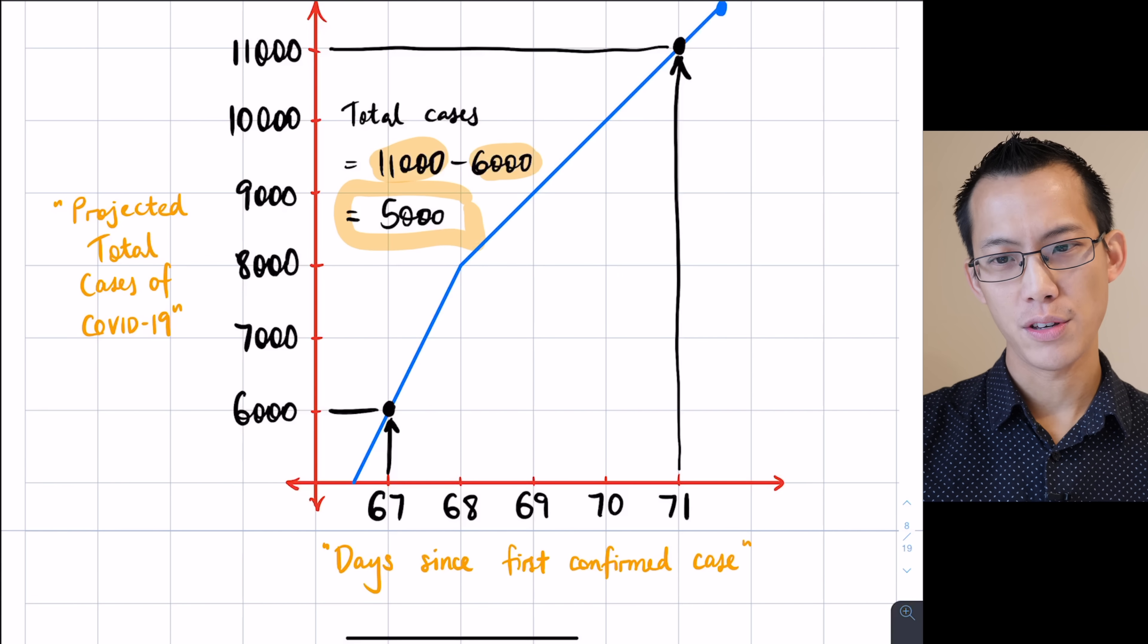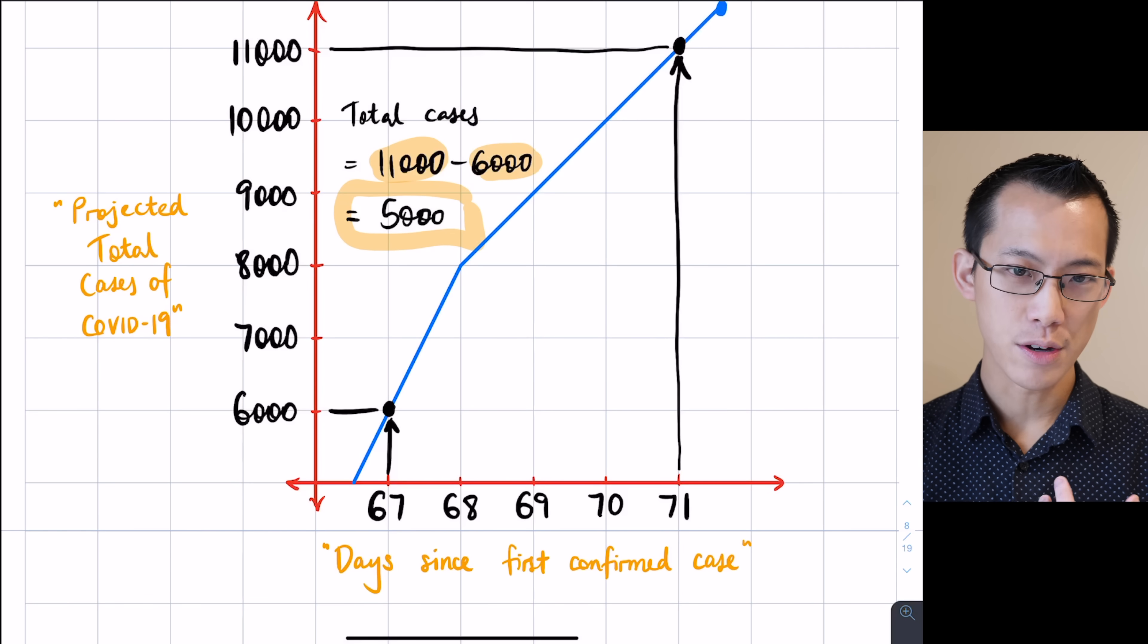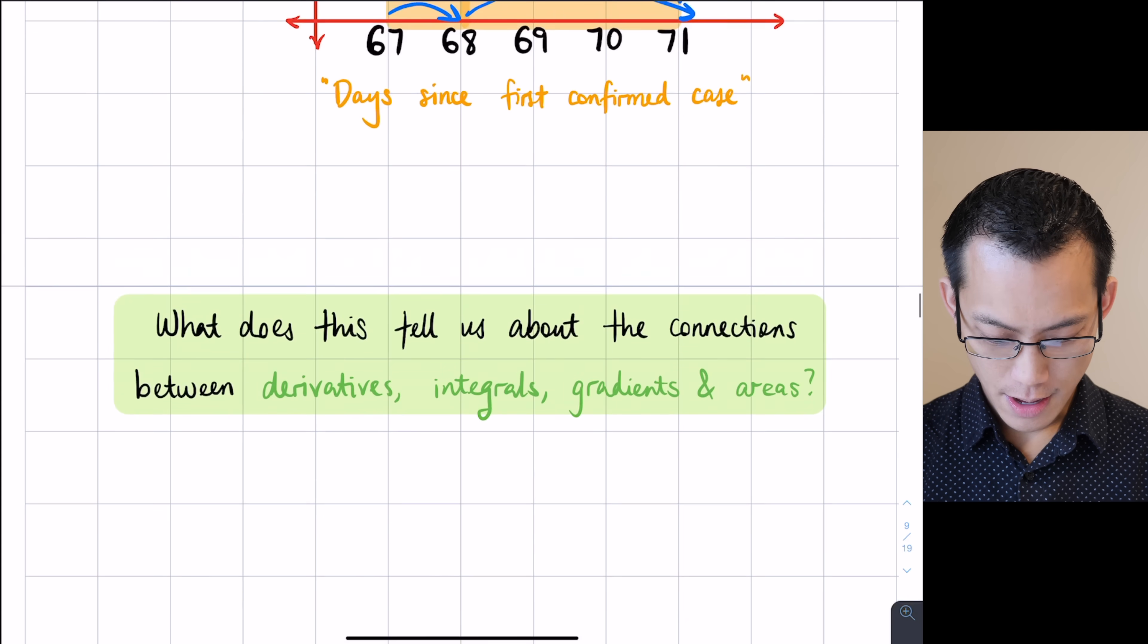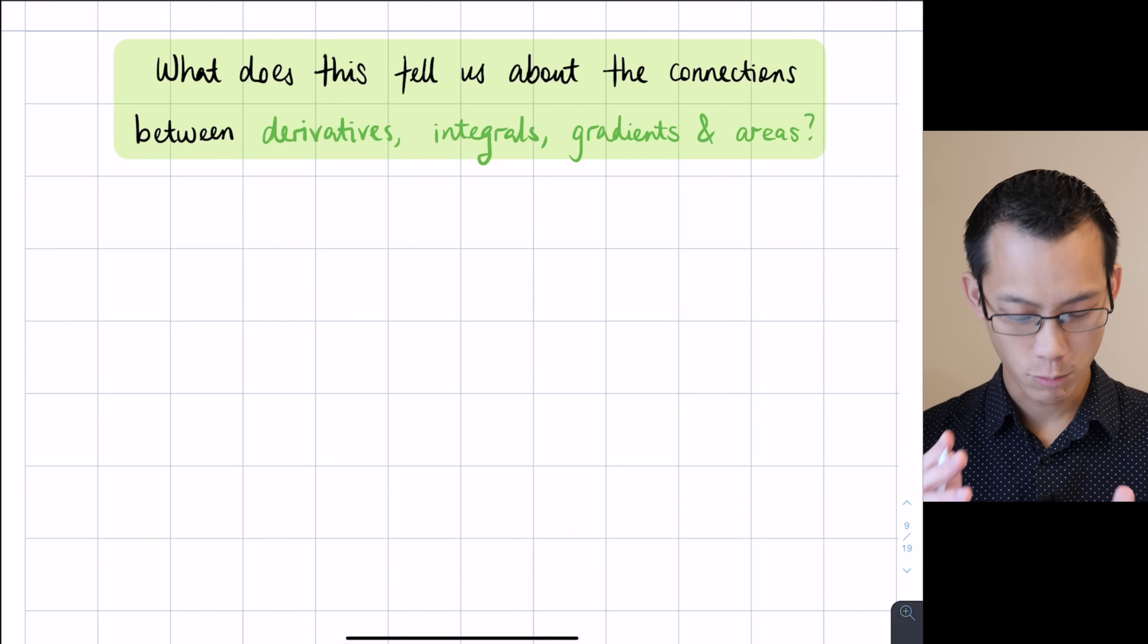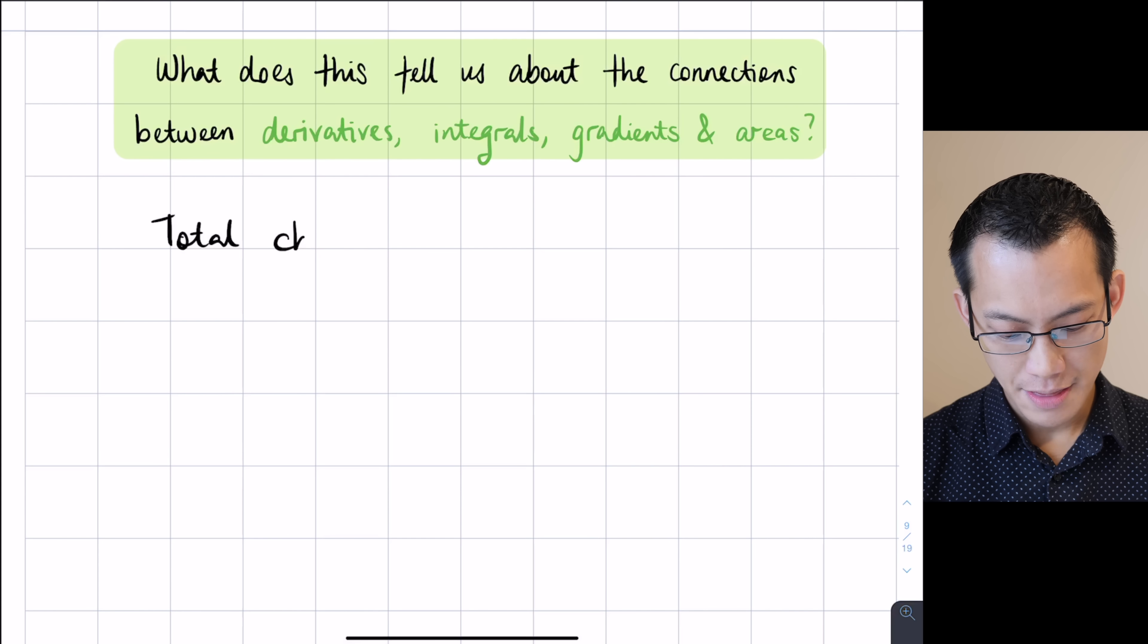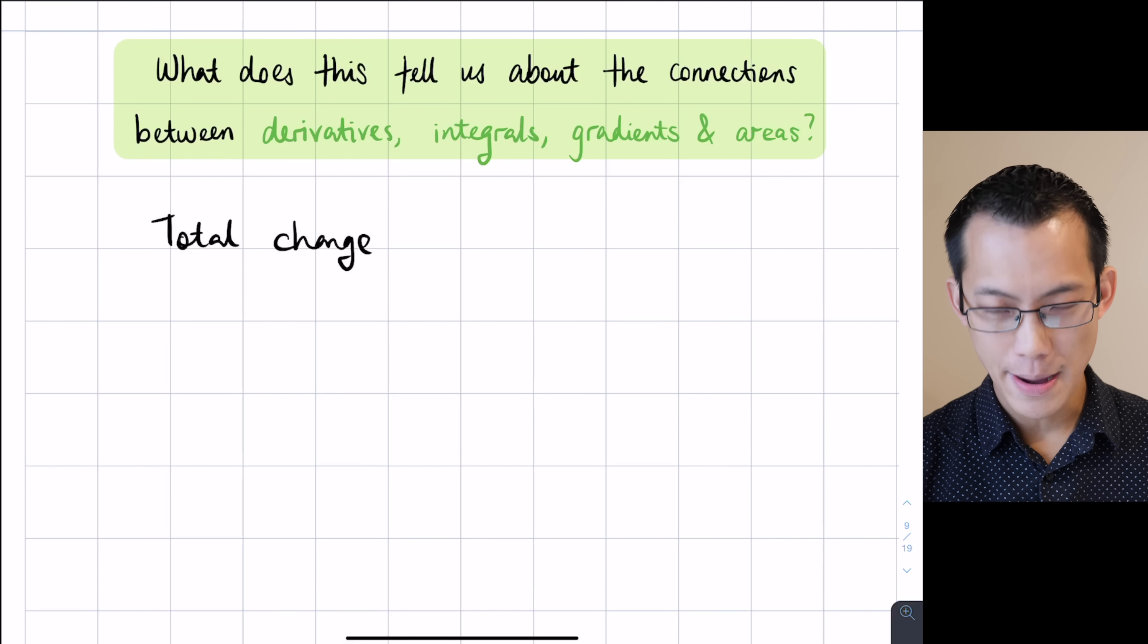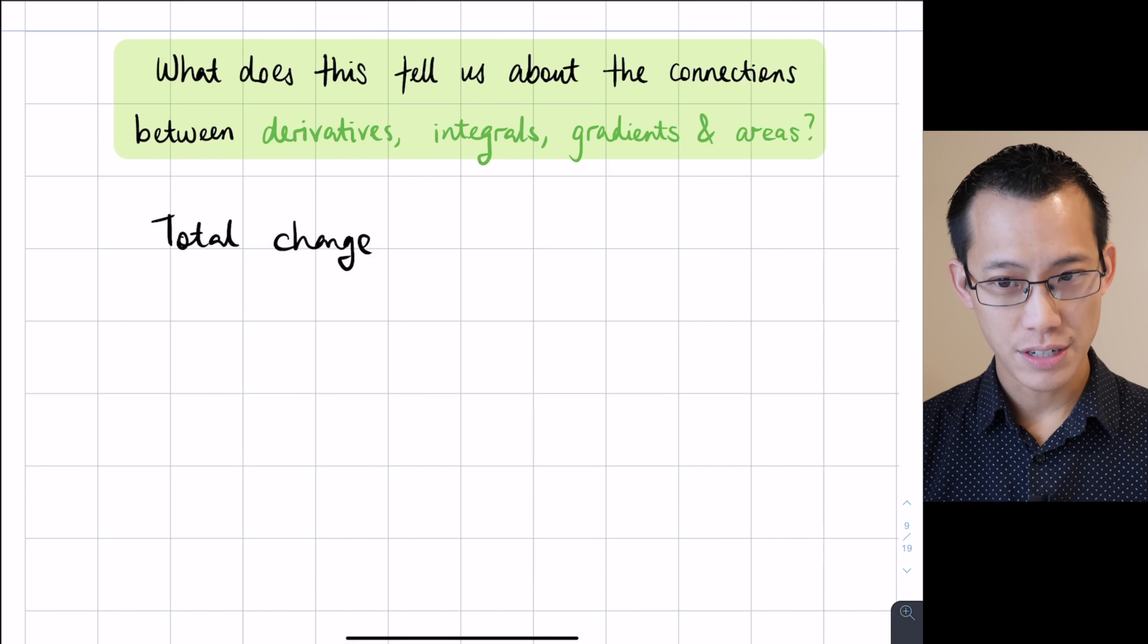So underneath where you've put those two graphs, let's try and capture what we've just said in some of the notation that we've already been using. Underneath here, what does this tell us about the connections between everything? Well, I was interested, remember, in total change. That was the question I was asking about these COVID-19 cases. And we looked at it in two different ways.